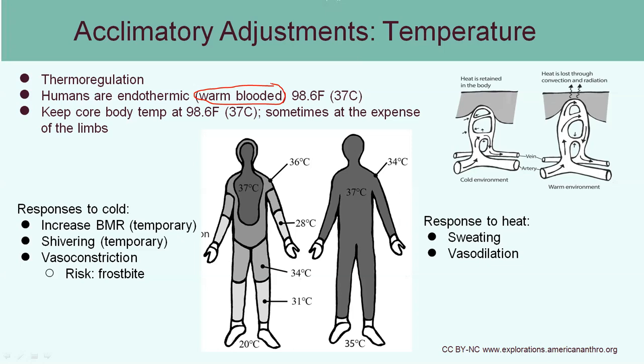So what happens if the external environment is too hot or too cold? If it's too cold, some adjustments that your body will make include increasing your basal metabolic rate. It also includes increased shivering, where your muscles are contracting without your control, and this increases the amount of heat production.